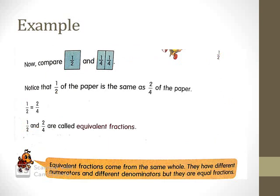You shade two of them. Now compare one over two with two over four. When you look at the first figure, you divided the rectangle into two equal parts and shaded one — so one over two means one part out of two equal parts. When you fold it again and divide into four equal parts and shade two of them, that represents two parts out of four equal parts. One part out of two equal parts equals two parts out of four equal parts — one over two of the paper is the same as two over four of the paper.